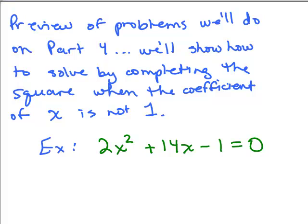Here's a little preview of what we'll be doing on part 4. We're going to continue solving quadratics by completing the square, but we're going to do ones when the coefficient of x squared is not 1, as we have right here. It's a 2, and that does complicate things a bit, so make sure you go on to part 4.